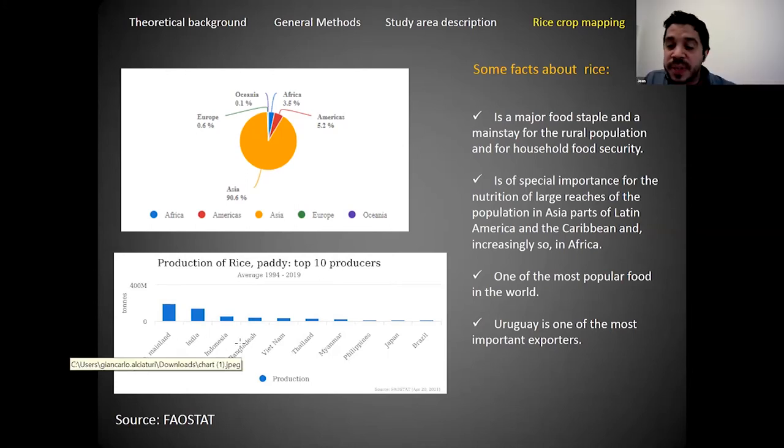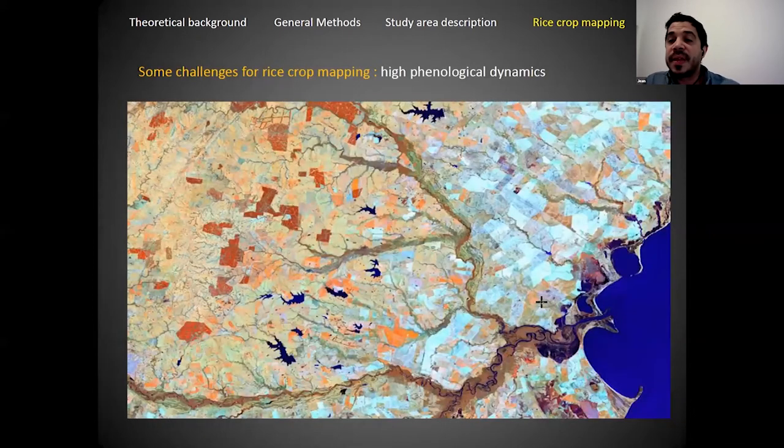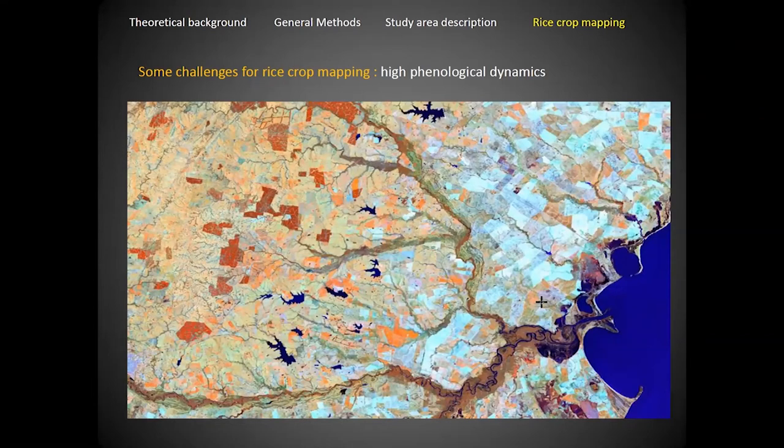We can see the main producing countries—the only non-Asian one is Brazil. What happens with Uruguay? Uruguay is not a big producer, but rice is very important for the country because Uruguay is the fifth or sixth exporter, so much of that production goes to other countries.